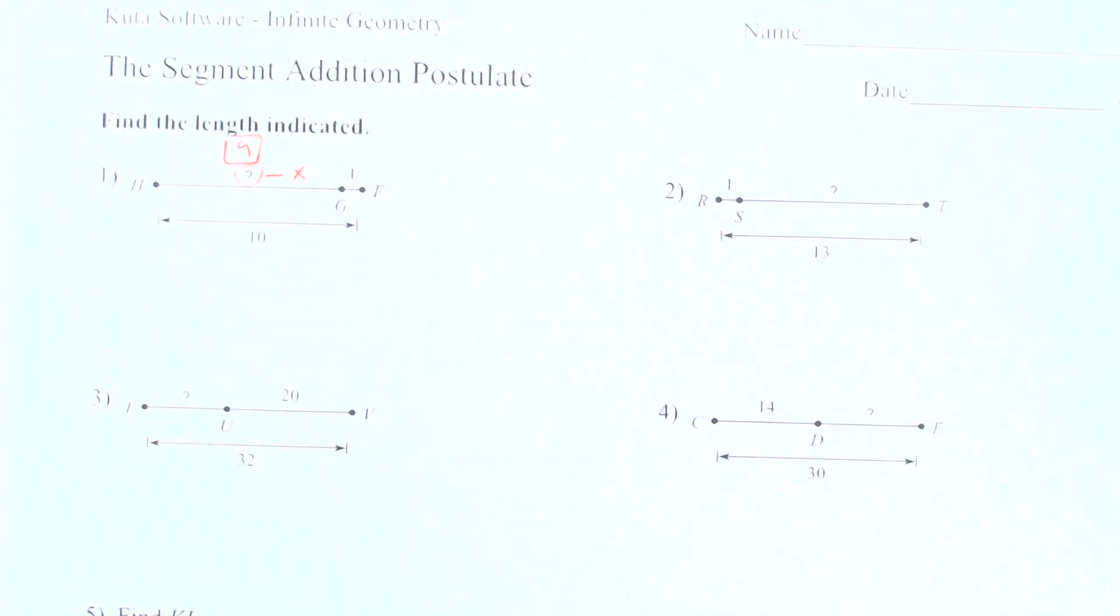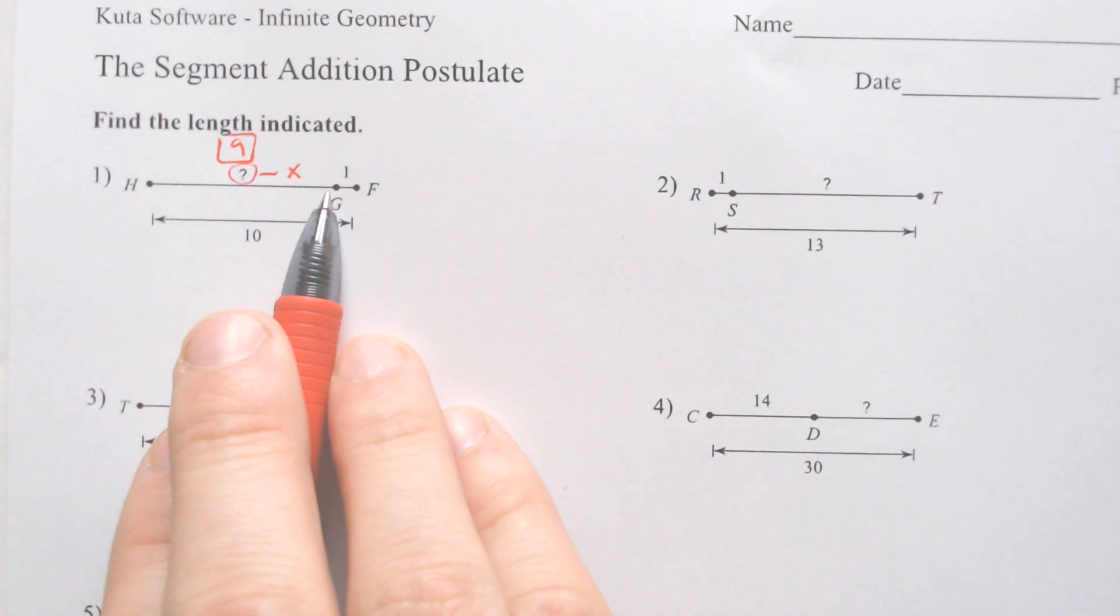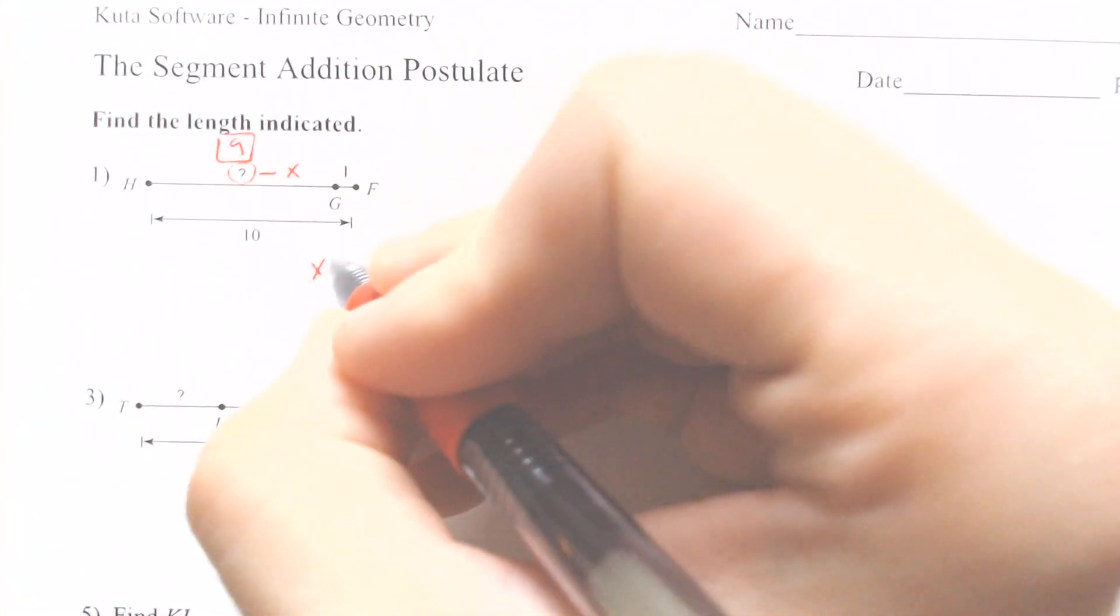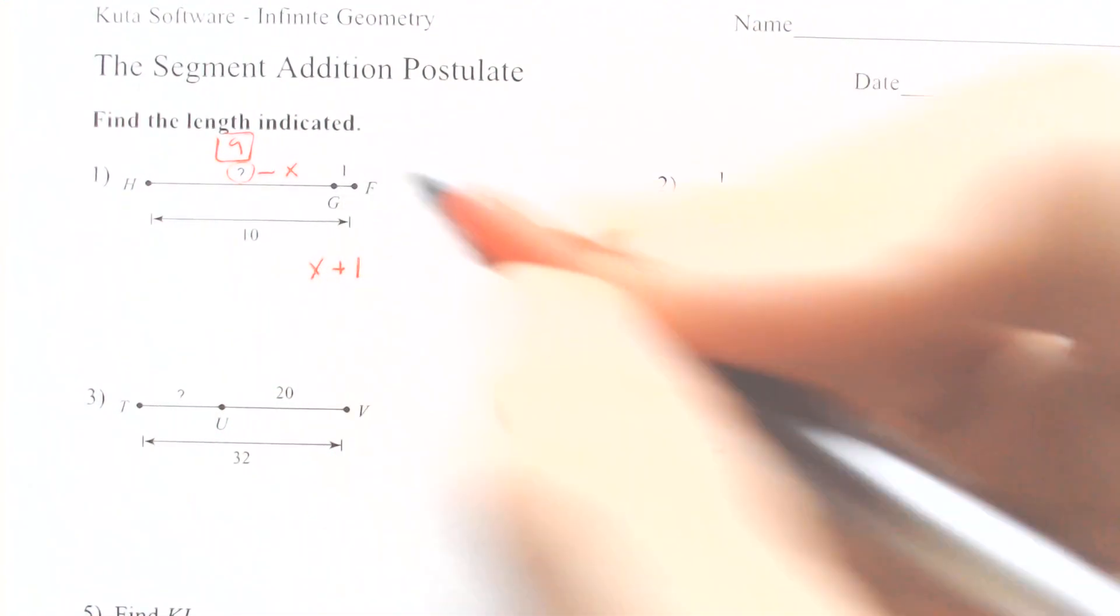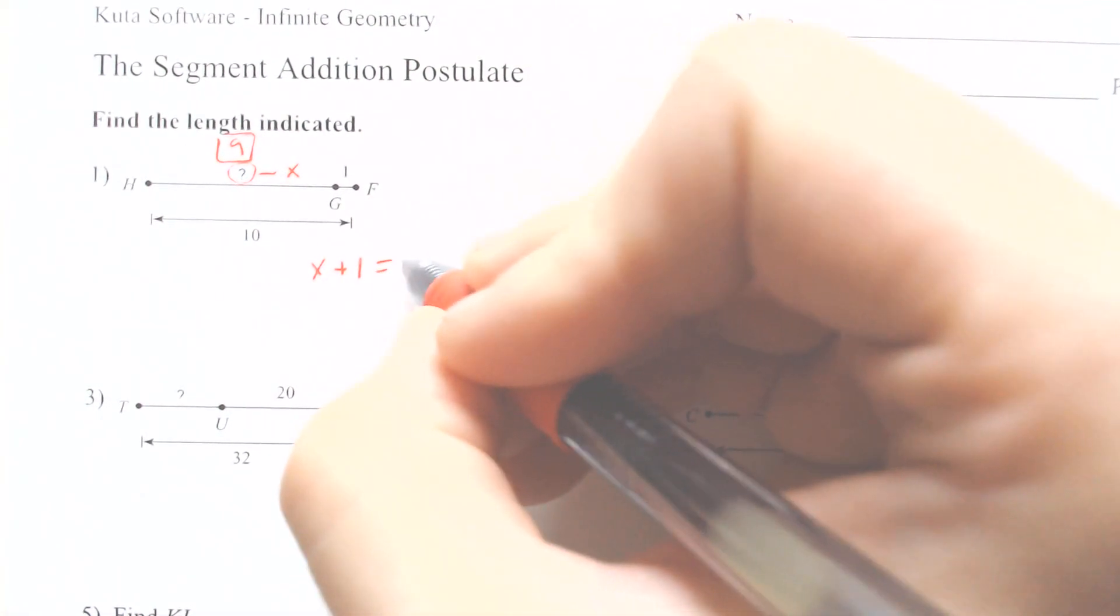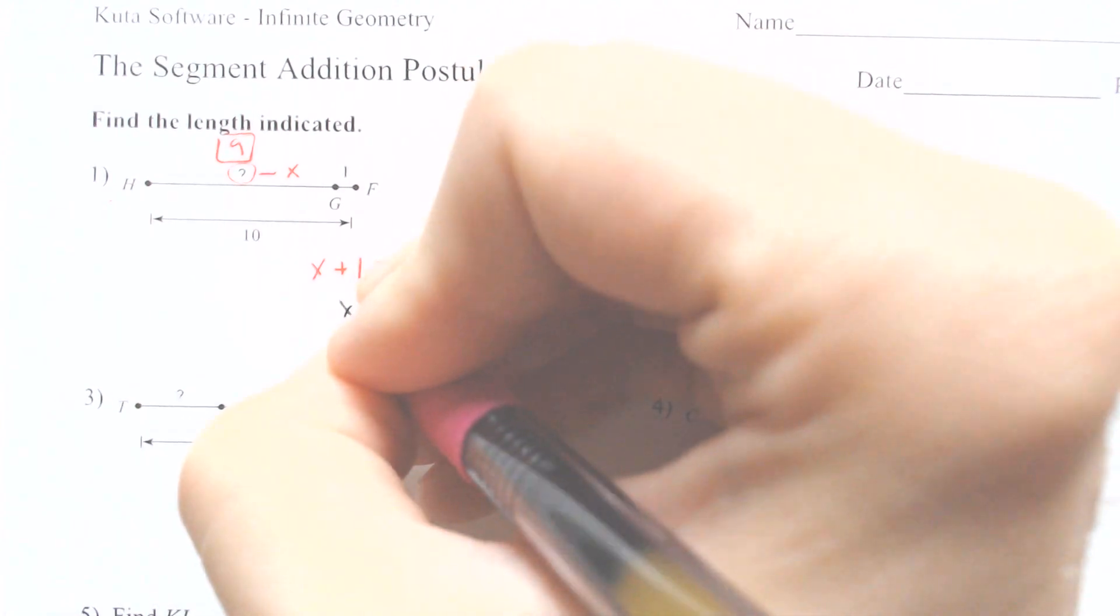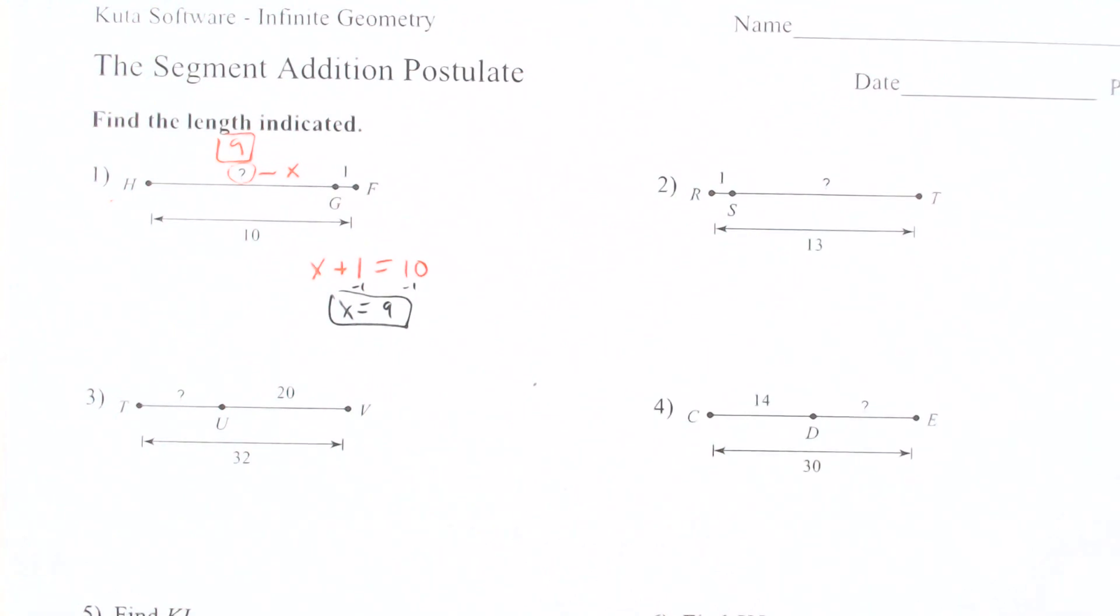Another thing you can do is replace that question mark with an X. Then you can be thinking from here to here is X, and that G to F is 1, so you could be saying X added with 1. If you add the two smaller sections together, it must equal the whole way across, which is 10. If you add X plus 1 and equal it to 10, then you can solve by subtracting 1 over to get X equals 9 that way.